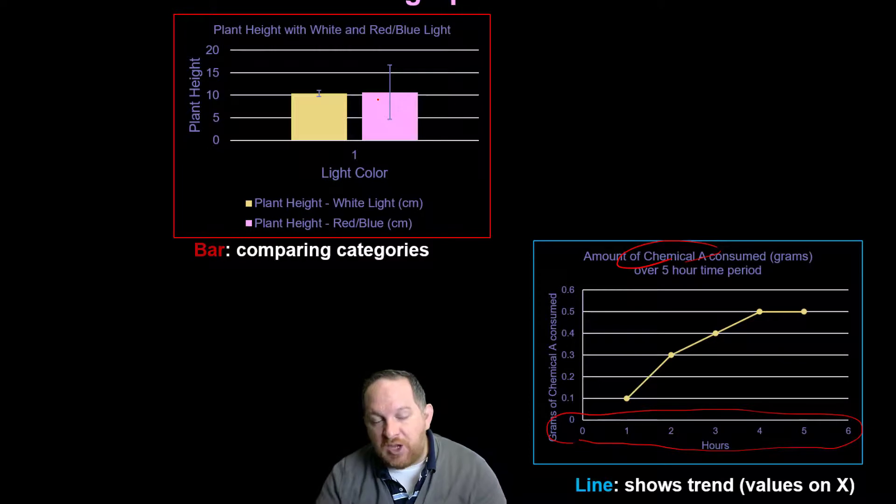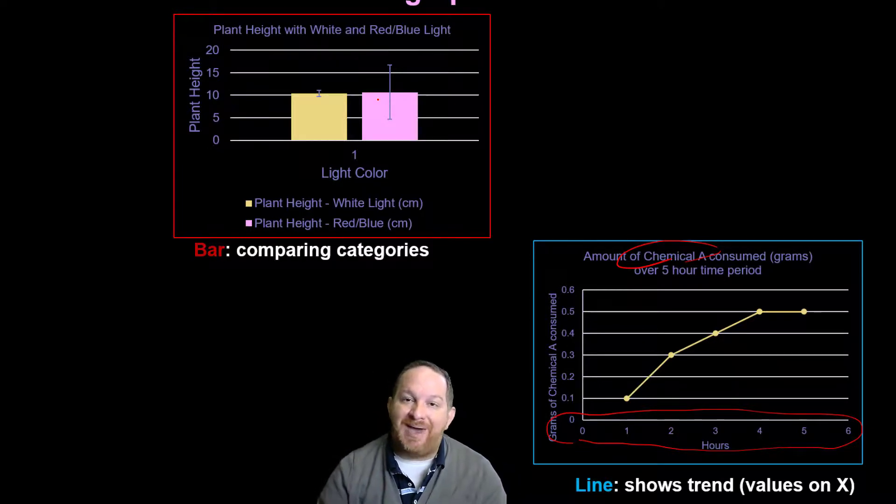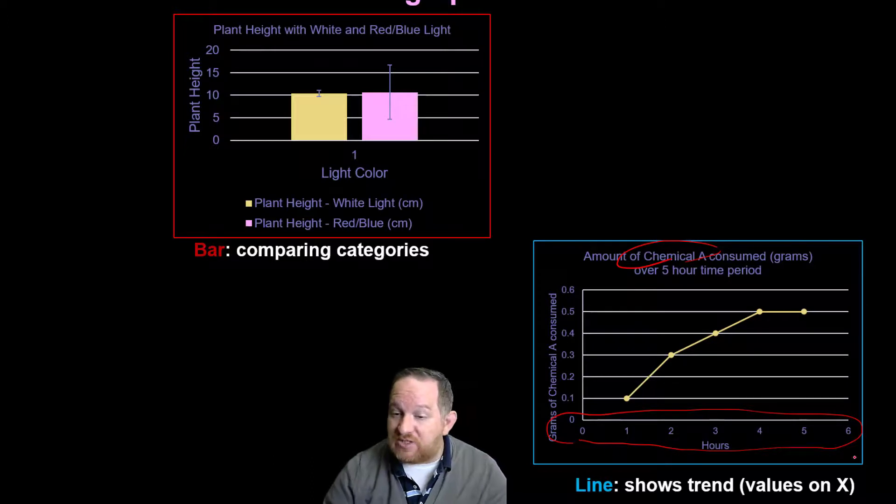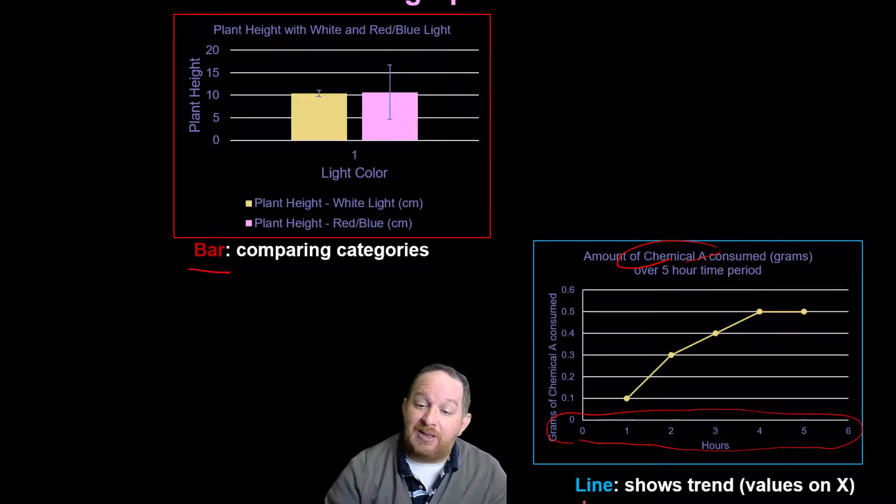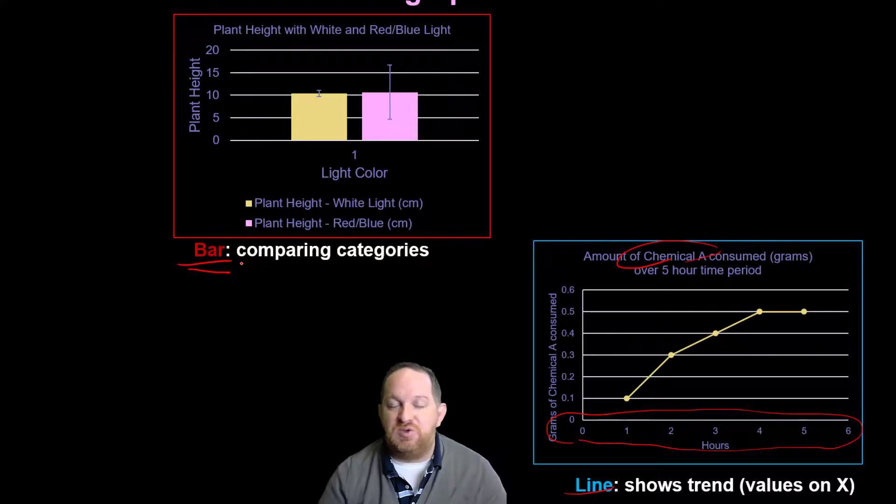So when you've got some data and you're trying to decide, really think about what you're trying to convey. Am I really just showing a trend over time and I've got some values down here? Use a line or a scatter graph. If you're really just comparing some categories, use a bar graph.